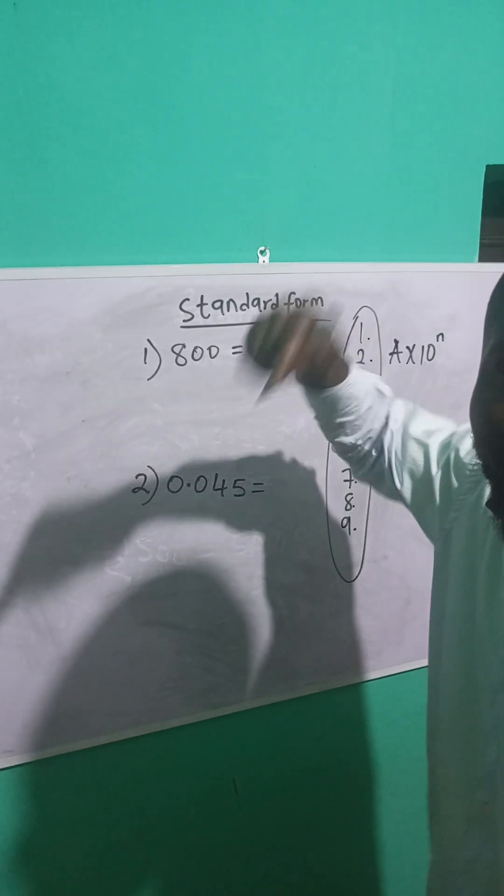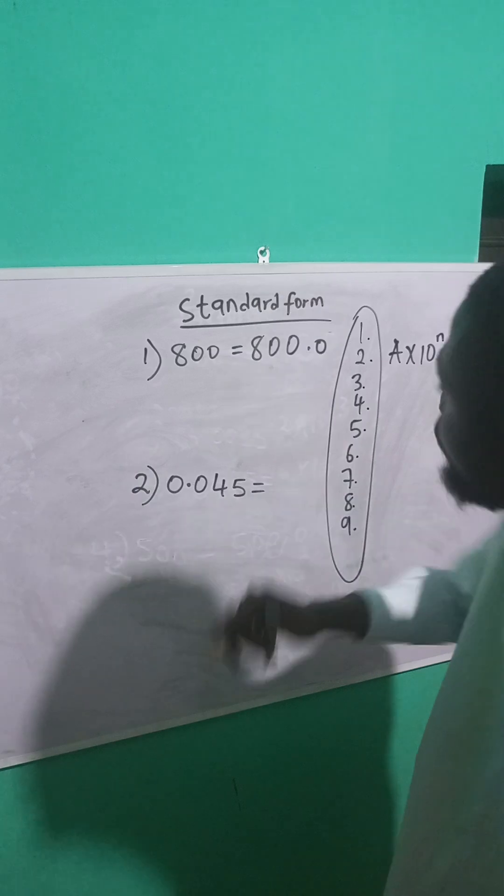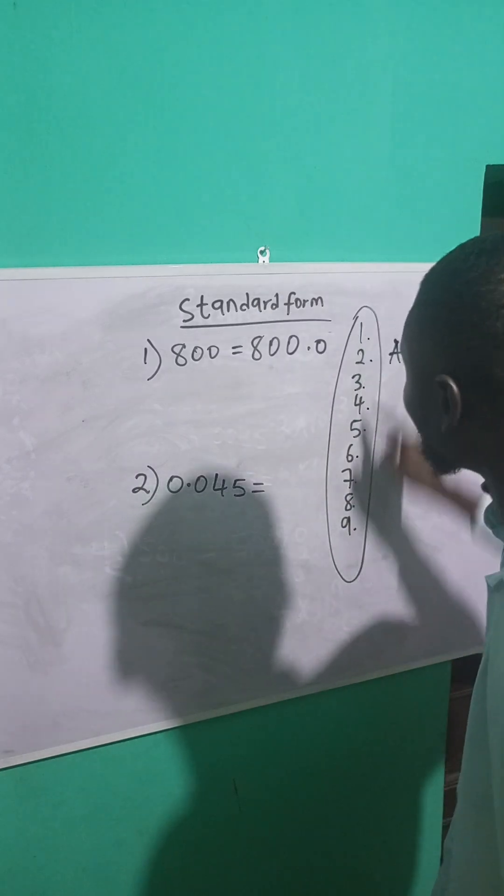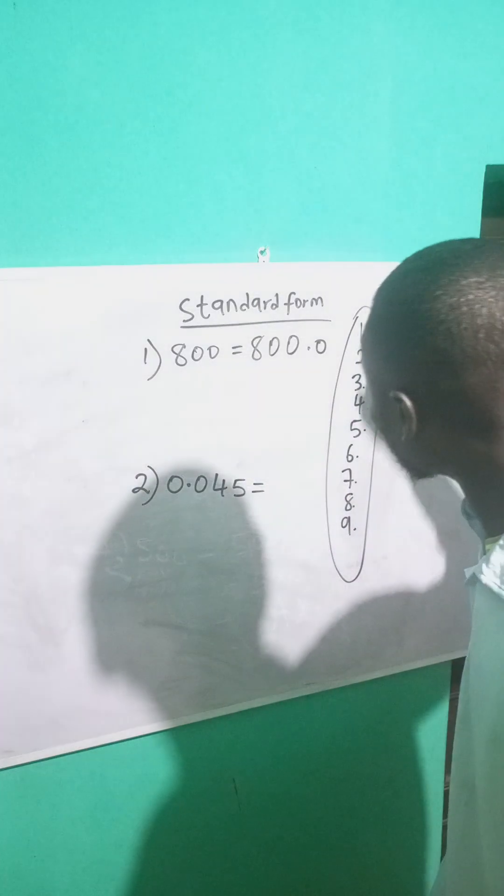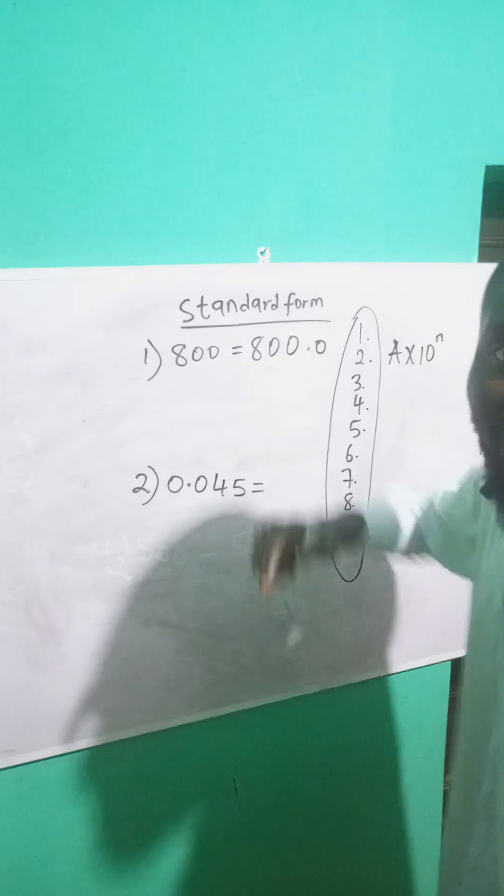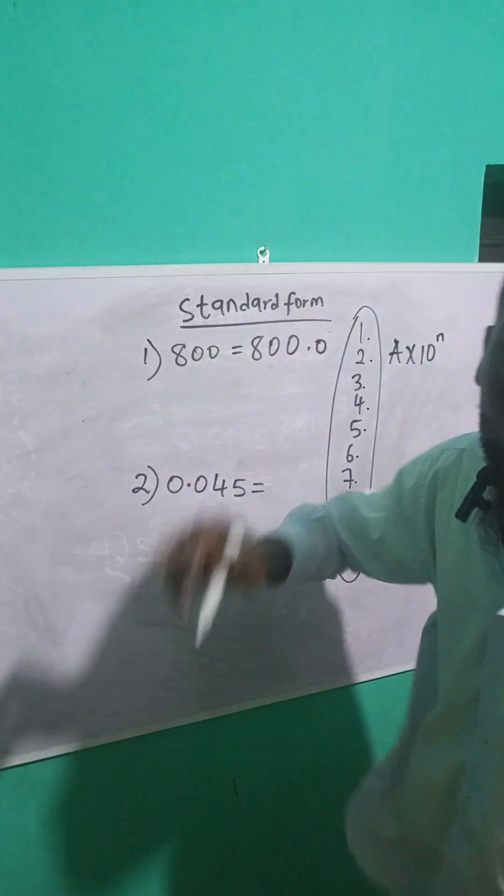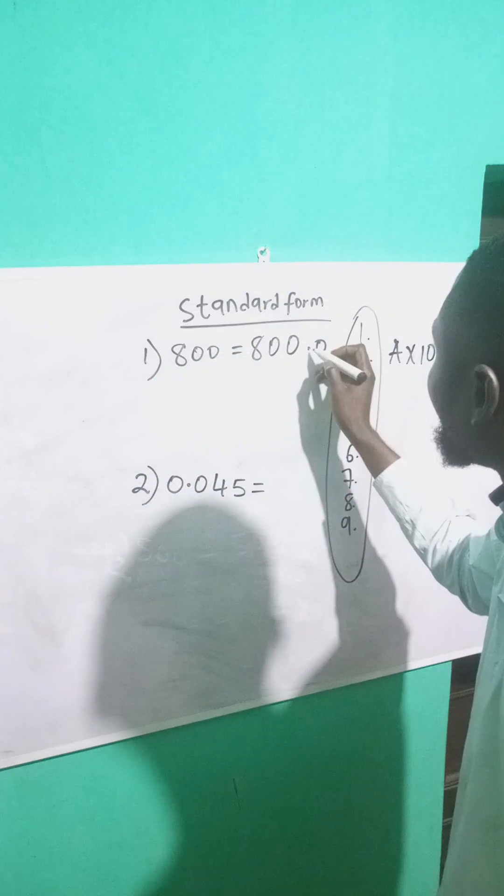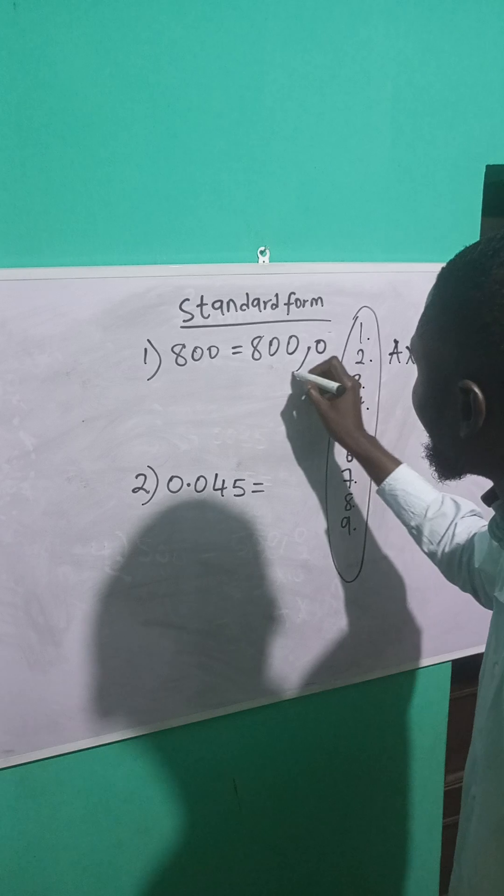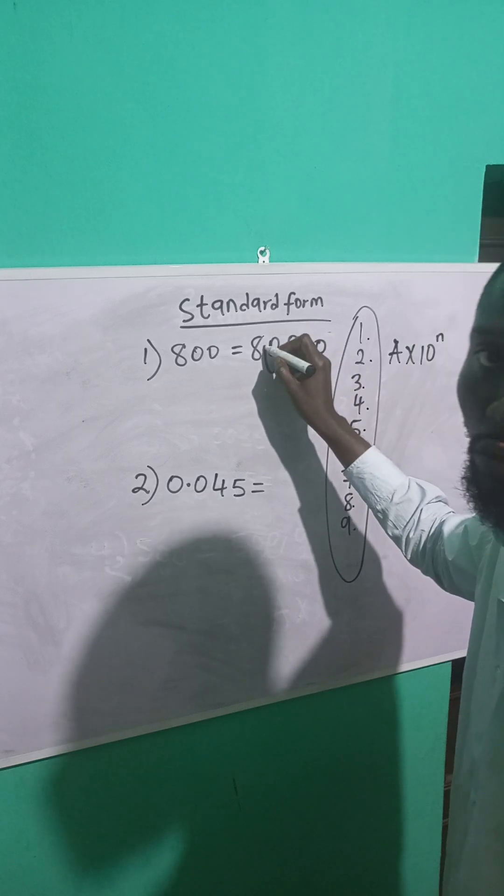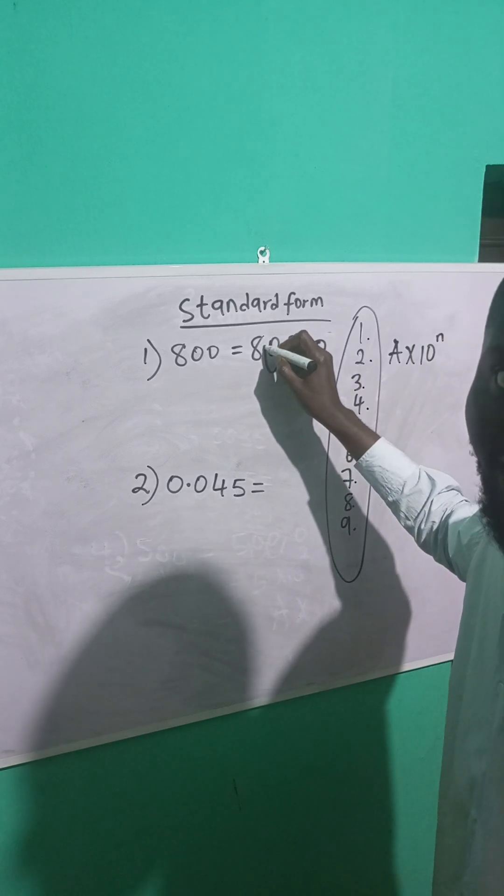A number that must be between one to nine, because my answer must be between one to nine. So I'll move from this decimal point like this: one, two. Once I get a whole number, I'll stop and put my decimal point.